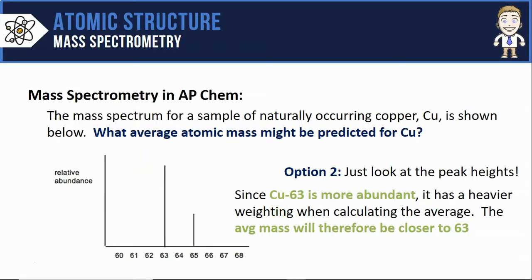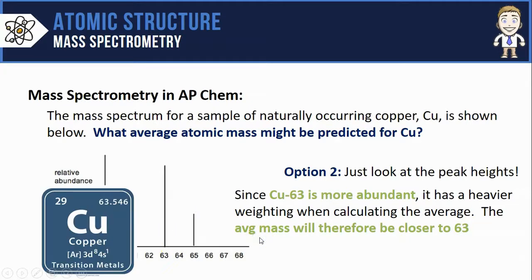It has a heavier weighting when calculating the average. That means my average mass is going to be closer to 63 than it is to 65. So somewhere up in this range between 63 and 64. If you check that on a periodic table, you'll find copper's mass is 63.546, just where we predicted.